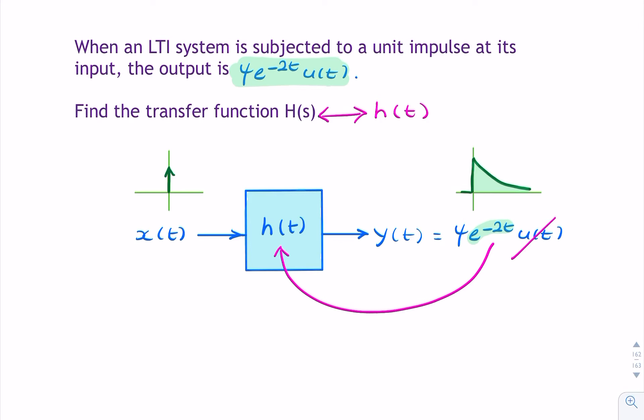Now, the Laplace transform of e to the minus at is simply 1 over s plus a. So in this case, h of s will be 1 over s plus a, where a, in our case, is equal to 2.